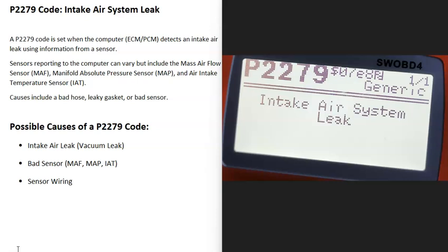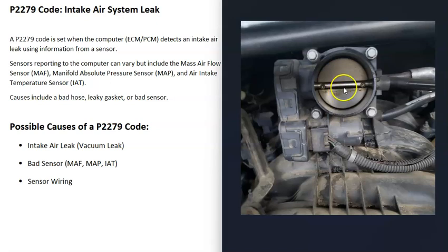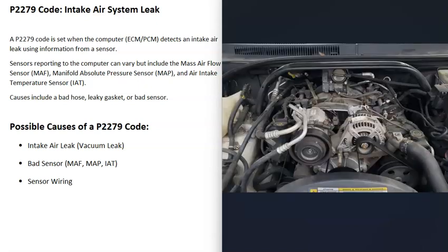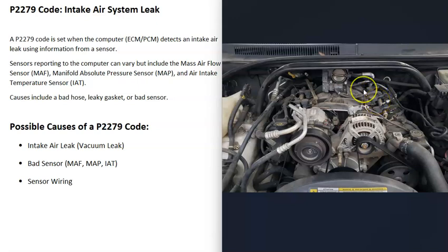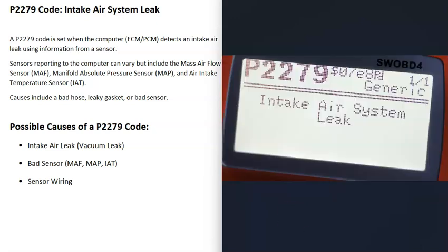Today I'm talking about a P2279 code — what it is and how you go about fixing it. The P2279 code is the intake air system leak. Basically, all the air going into the engine should be going in through the throttle body, so the computer can control and measure how much air is going in using different sensors. When you get a P2279 code, the computer is seeing that air is somehow coming into the engine around the throttle body.